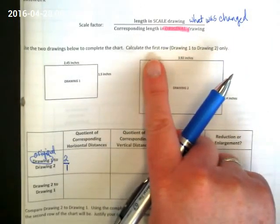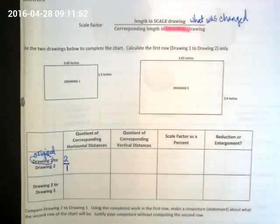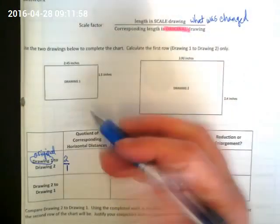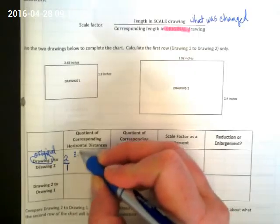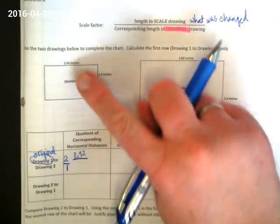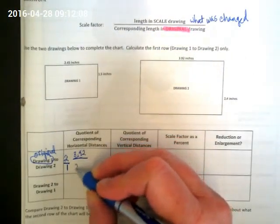So let's compare horizontal distance. Horizontal goes across, just like the horizon when you're looking out at the sunset—that's the horizon, horizontal goes across. What is our horizontal distance for drawing two? 3.92. And what is our horizontal distance for drawing one, in this case our original? 2.45.